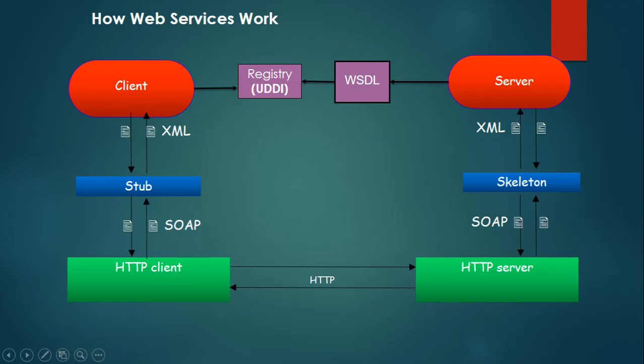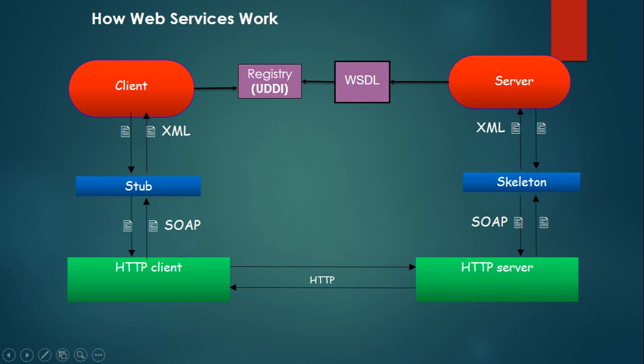This WSDL file is sent to the UDDI registry software, which stores the file with a unique name. The client accesses the WSDL file from this UDDI registry and generates some classes called stubs using a stub generation tool. These classes contain the methods or services the client wants from the server. The stub is then converted into an XML document called a SOAP request, which is sent to the server location via the HTTP protocol to the HTTP server.